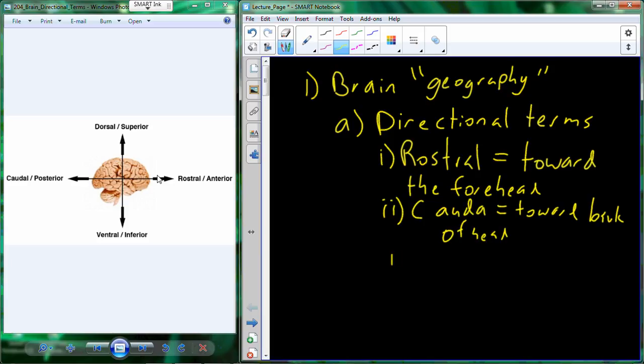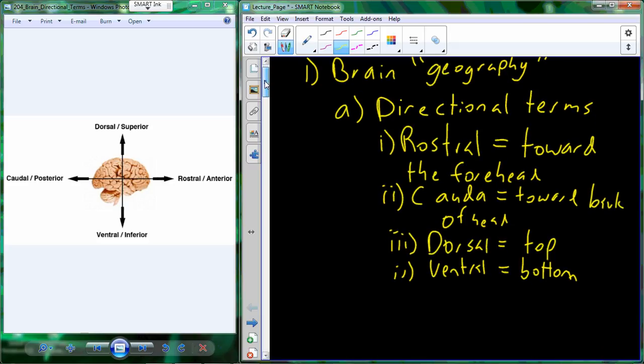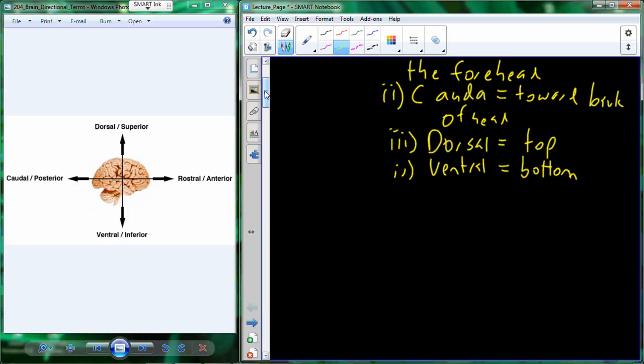Then the top is referred to as the dorsal surface, which is going to be top, could also be used here as superior. And then we could use ventral to describe the bottom, also can use inferior. Now you can also look at the left and right using terms such as medial and lateral.